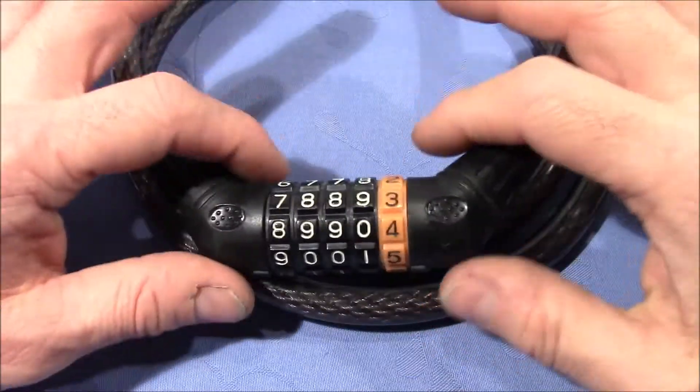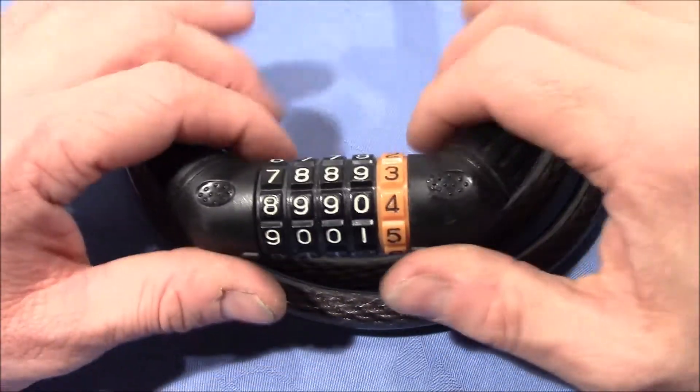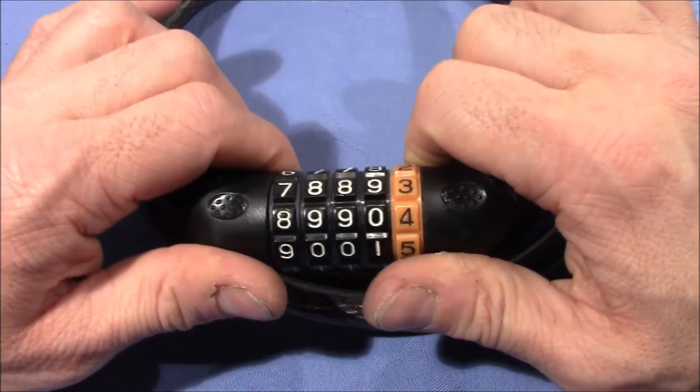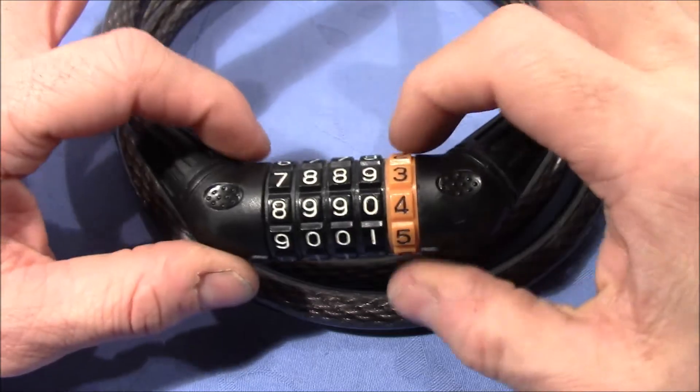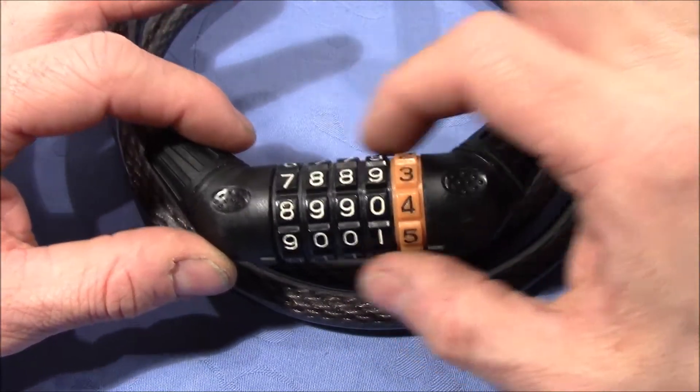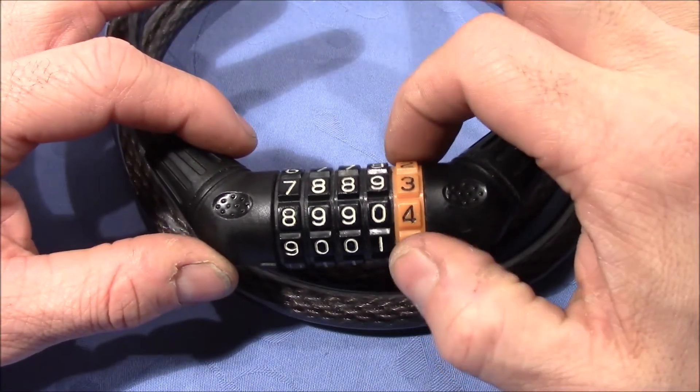When you decode these kind of locks, you will try to tension the mechanism by pulling the two parts apart and under tension turn the wheels. You choose the wheel that shows the most resistance, turn it until you feel a click.